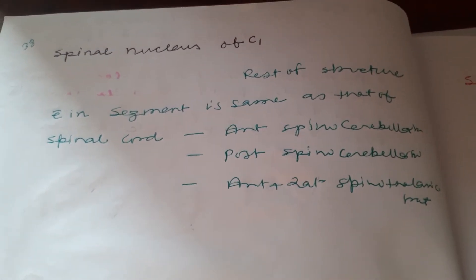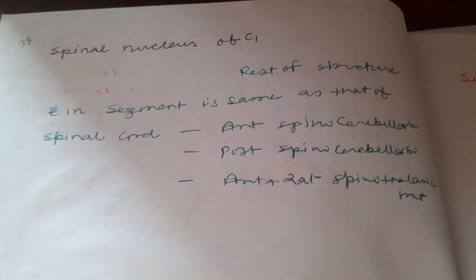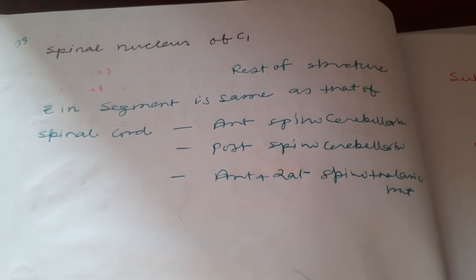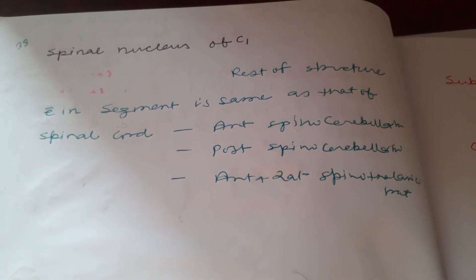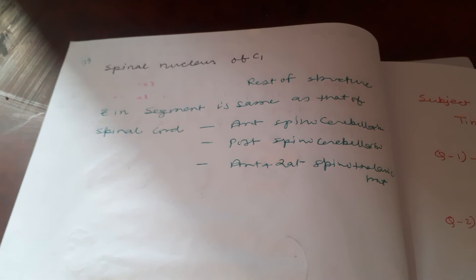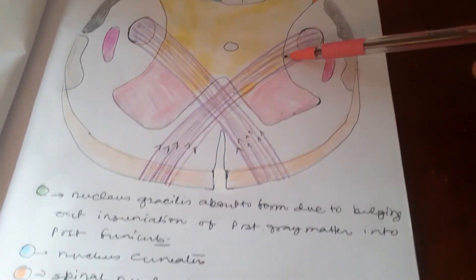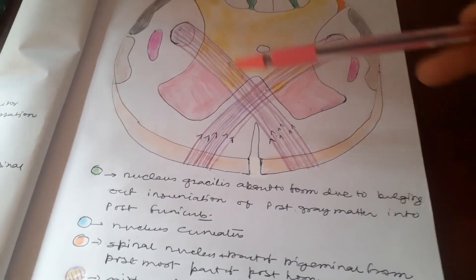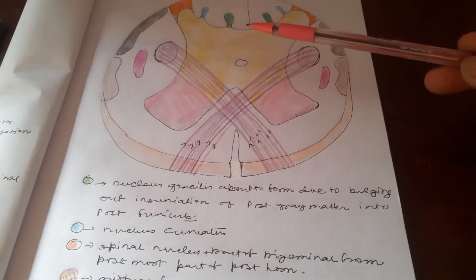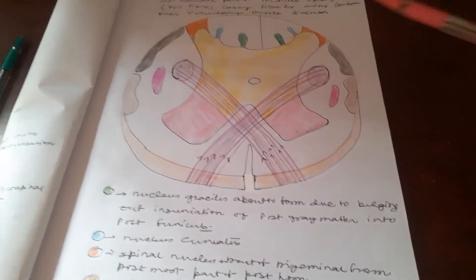The rest of the structure is the same as that of the spinal cord — that is, the anterior spinocerebellar, posterior spinocerebellar, and anterolateral spinothalamic tract. We have to make this diagram, color it, and mention what each structure stands for.